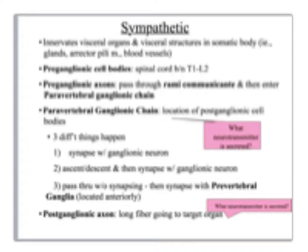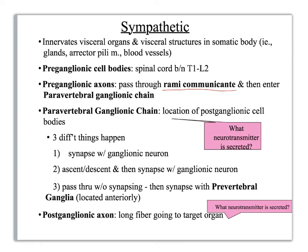This is your basic note slide. If you can do all of this, you've got what you need for lab. Structures you need to be able to identify: on a spinal cord model, you should be able to find the rami communicantes and the paravertebral ganglionic chain. Depending on the model, you should also be able to see the prevertebral ganglia. Always remember what neurotransmitters are being secreted at each place.